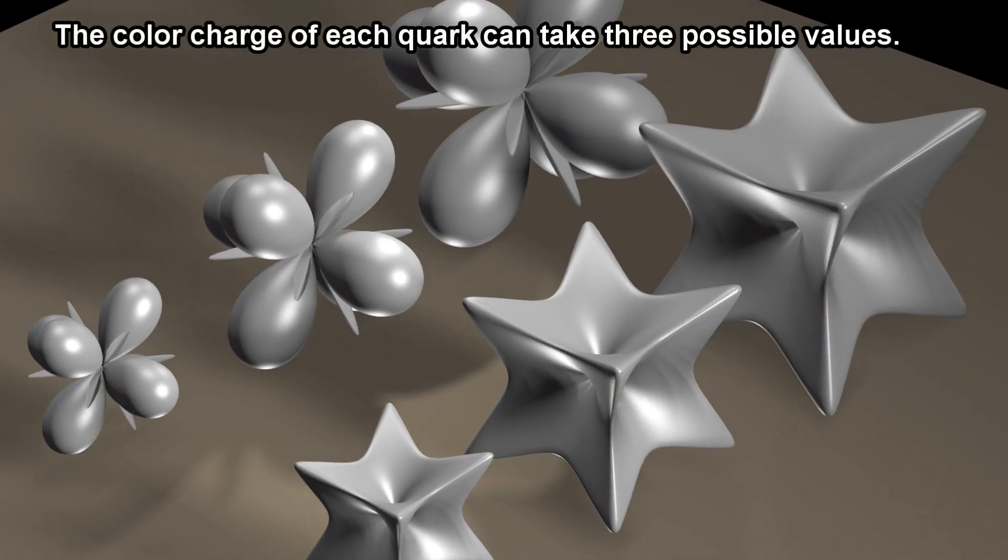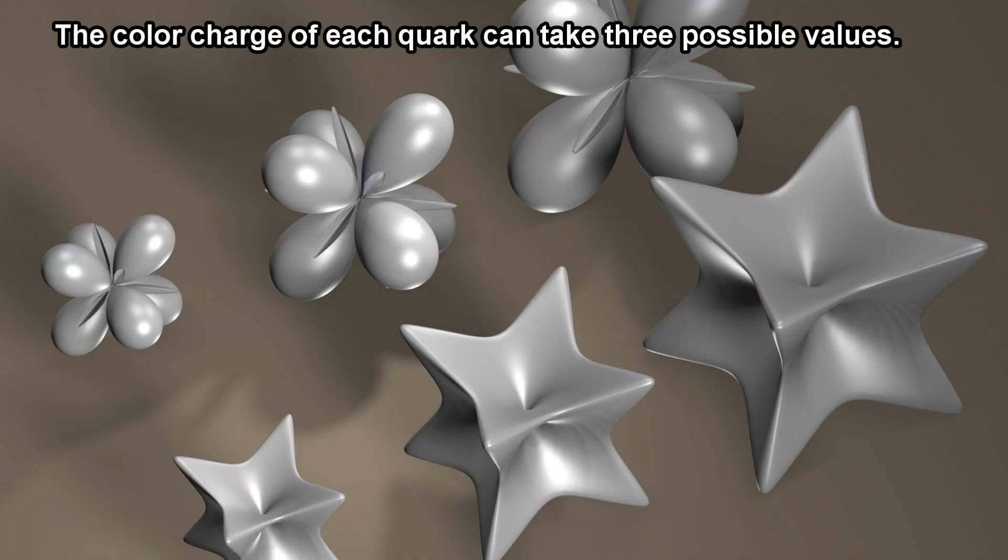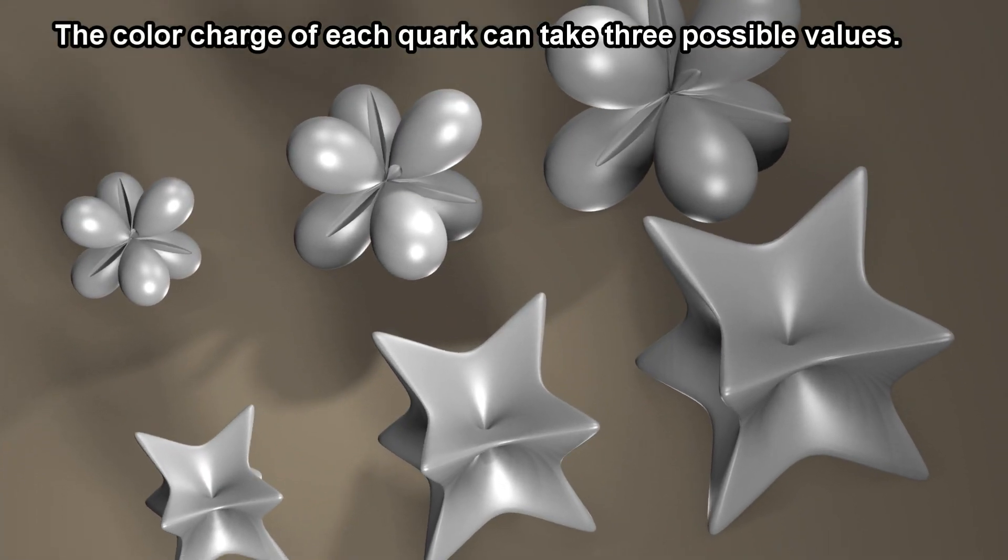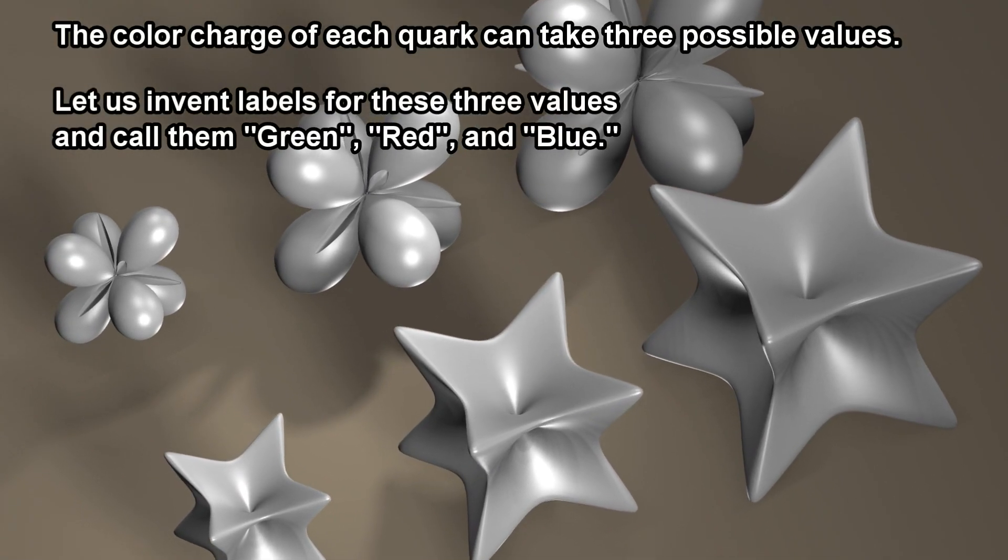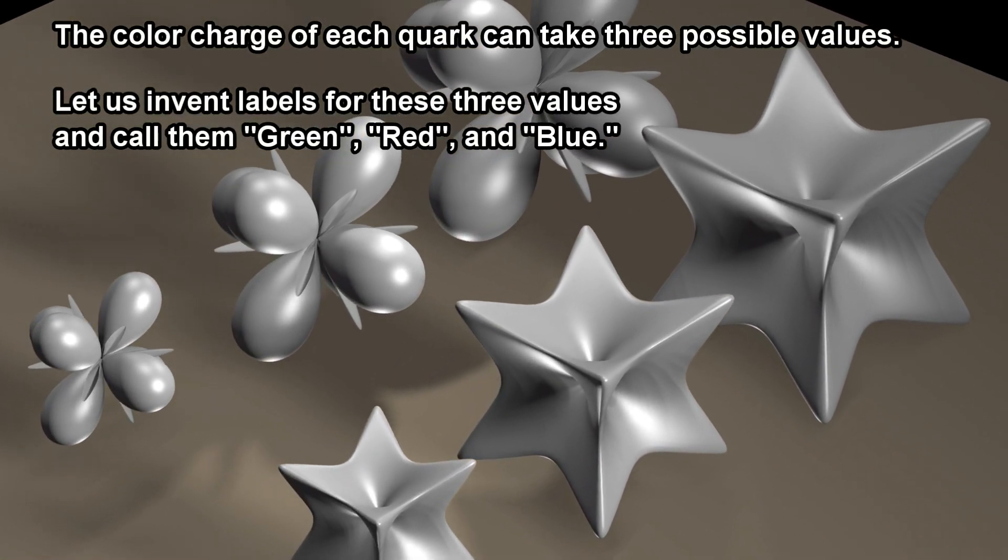The color charge of each quark can take three possible values. Let us invent labels for these three values and call them green, red, and blue.